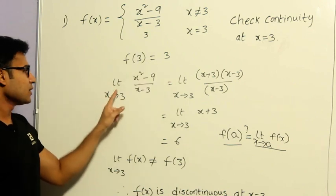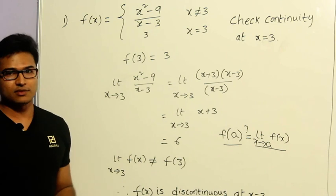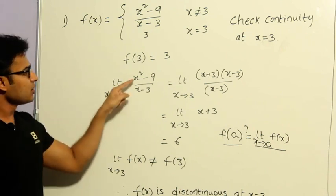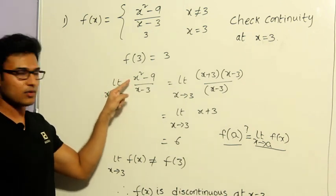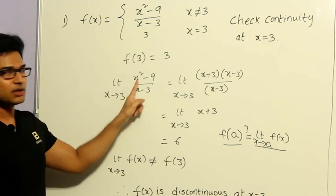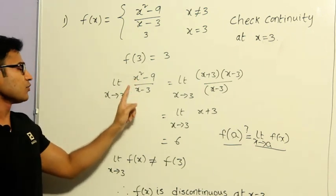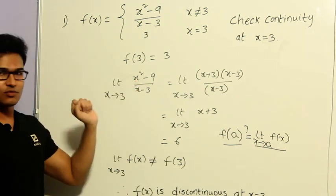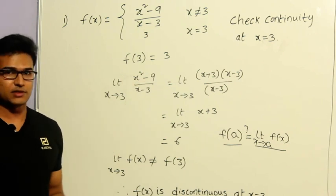Now, what about the other one? Limit x tends to 3 of x squared minus 9 by x minus 3, we have to find it out. Since it is going to be 0 by 0 form, right? See, if I put 3 there, it is going to be 0 by 0 form. So I am going to convert it to factorization.